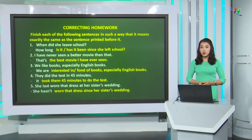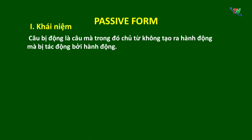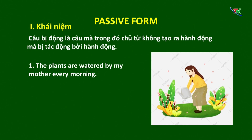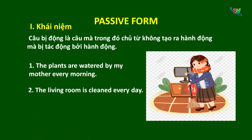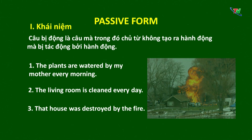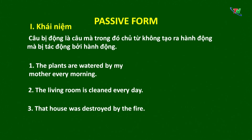Các em ạ, ngôn ngữ của chúng ta rất là phong phú. Người Việt thì thường dùng lối nói chủ động, trong khi người Anh thì thường có xu hướng sử dụng nhiều hơn những câu bị động. Vậy câu bị động là gì? Và chúng ta dùng câu bị động trong những trường hợp nào? Câu bị động là câu mà trong đó chủ từ không tạo ra hành động mà bị tác động bởi hành động. Ví dụ: 'The plants are watered by my mother every morning.' Những cái cây này được tưới bởi mẹ của tôi vào mỗi sáng. 'The living room is cleaned every day.' Ví dụ tiếp theo: 'That house was destroyed by the fire.' Ở đây ngôi nhà bị tác động bởi hỏa hoạn.